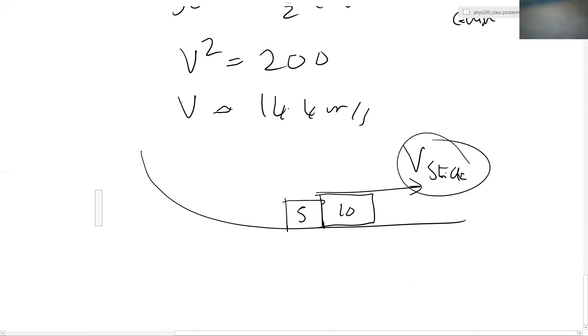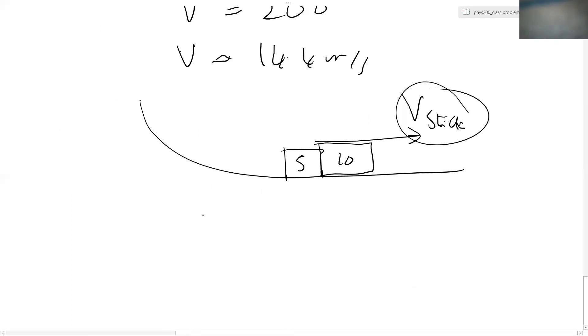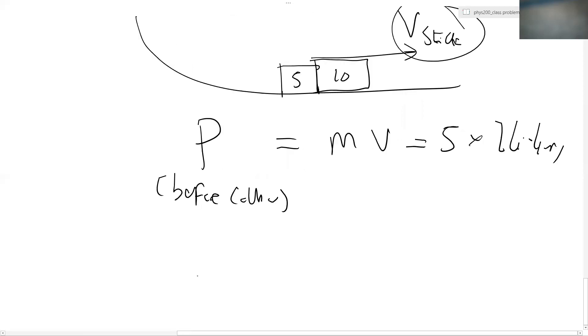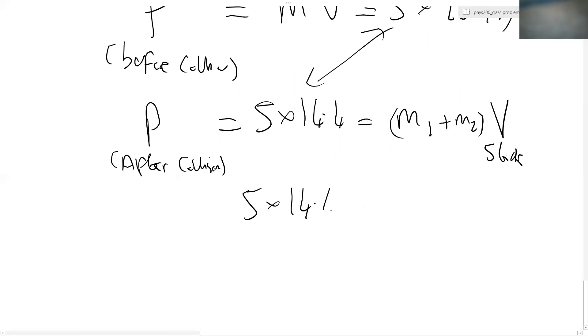Now I want to find out what that is. Now I can't use energy conservation. I have to use momentum conservation. So the momentum before the collision is just equal, is simply equal to MV, where that is five multiplied by 14.4 meters per second. And the momentum after the collision is also equal to five times by 14.4, because it's the same as before. But now both masses are stuck together. So we have M1 plus M2 times by V stick. Well, that's the sum of the masses.